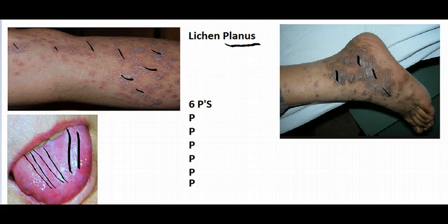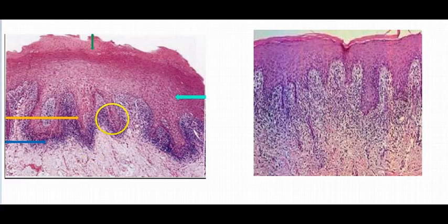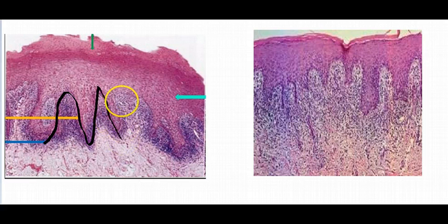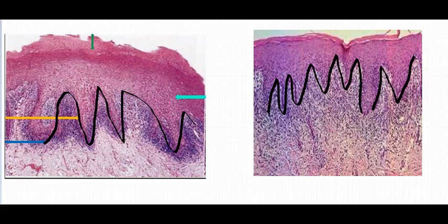Now let's talk about histology. Histologically, what's really high yield is that at the dermal-epidermal junction, there's lymphocyte infiltration. The second picture — doesn't this look like teeth biting into something? That's why this is called saw-tooth appearance.